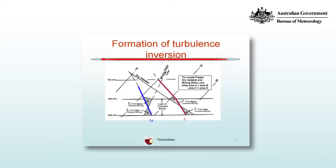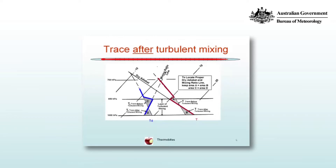Likewise, we can do the same thing for the dew point profile by picking the right mixing ratio isopleth, so that areas C and D are also equal. This will produce a discontinuity at the top of the mixed layer, which becomes our turbulent inversion shown in the schematic here.